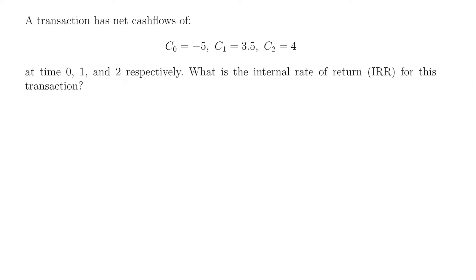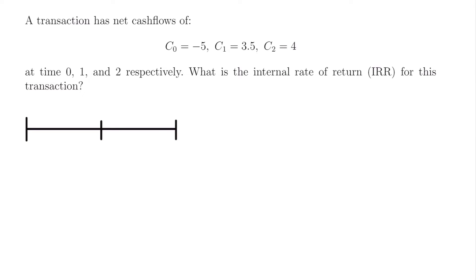The first thing I recommend when working with a transaction with cash flows and you want to calculate the internal rate of return is to draw a timeline. In this case we know we're working with three moments in time: time equals 0, time equals 1, and time equals 2. So we will have a timeline with three dates — time equals 0, time equals 1, and time equals 2.